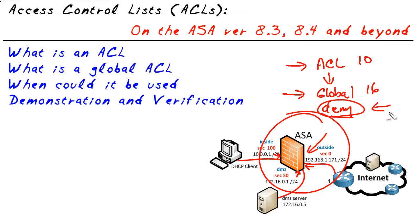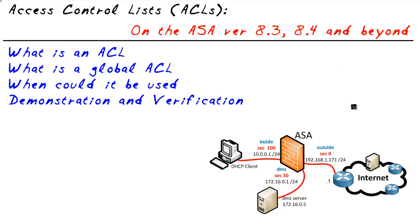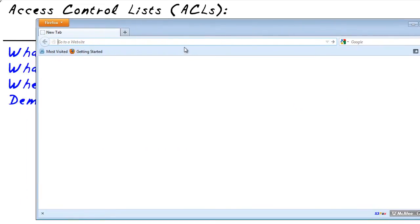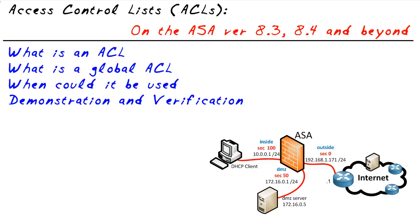You can have your cake and eat it too — you can have interface ACLs if you want them, plus a global ACL. Let's demonstrate this. First, let's do a quick test. We'll bring up a browser from a device on our simulated internet and go to that global address of 192.168.1.176. It's going to time out — it's not going to make it because we're trying to go uphill. The client on the internet is coming in on this interface at security level zero, and the packet needs to be forwarded to the interface at security level 50. We have two solutions: an interface ACL, or a global ACL to cover all interfaces.